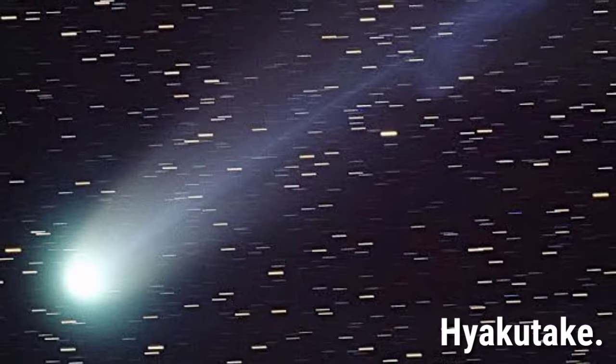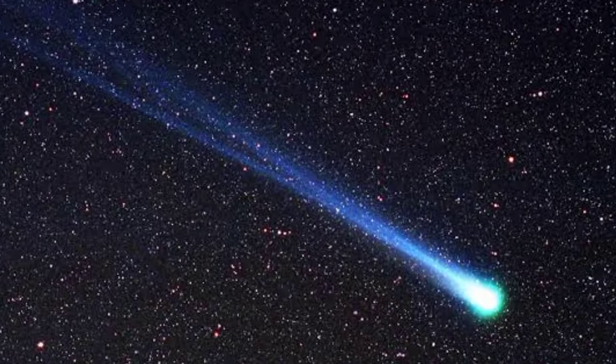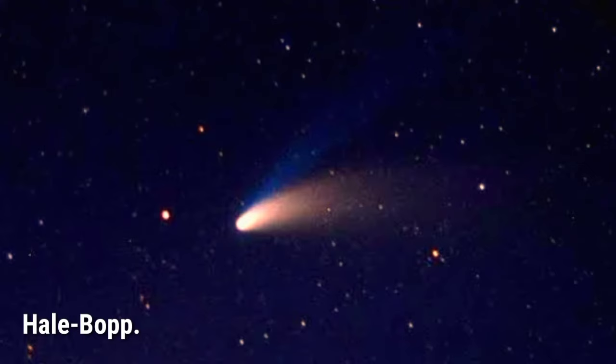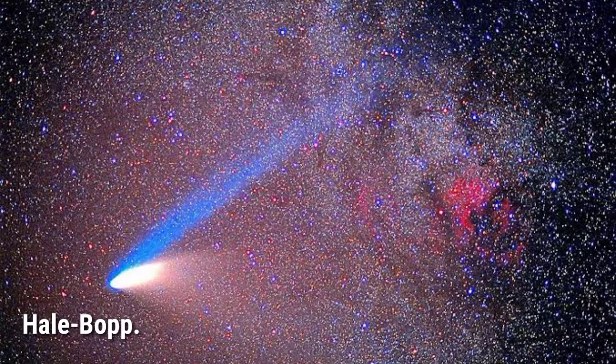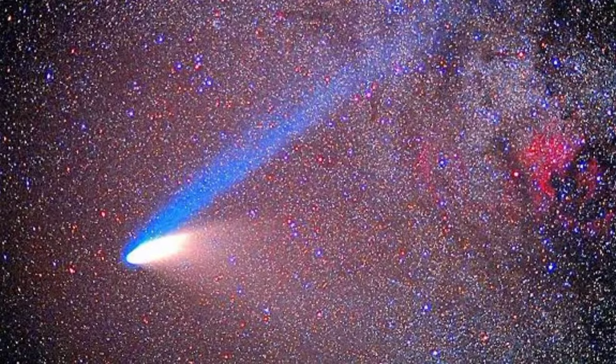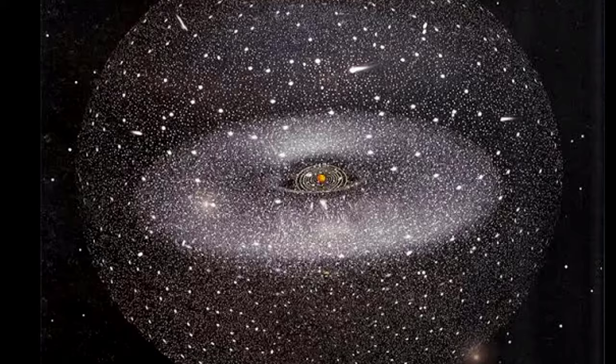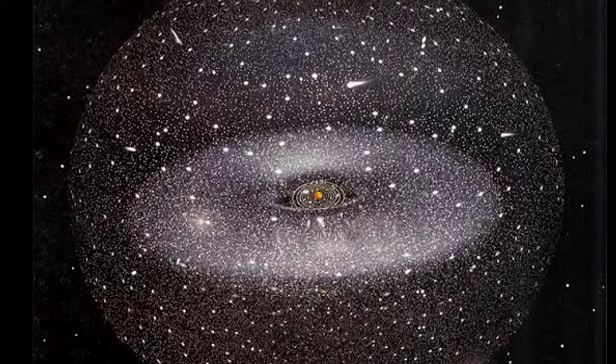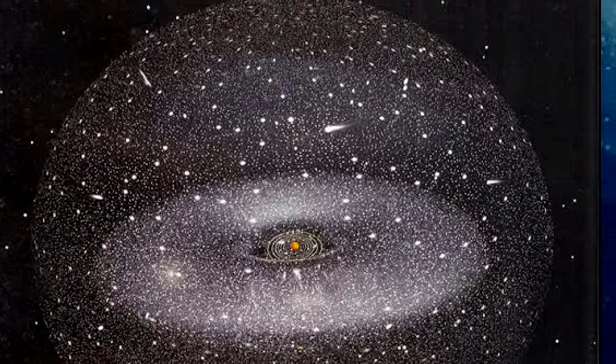When the comet Hyakutake passed within 9 million miles of Earth in 1996, it was completing a journey of about 17,000 years from the distant reaches of the Oort cloud. Hale-Bopp was another long period comet that traveled in from the Oort cloud. Visible for nearly a year and a half, it passed within 122 million miles of the Earth. Both of these Oort cloud objects had their orbits drastically changed as a result of their pass through the solar system.